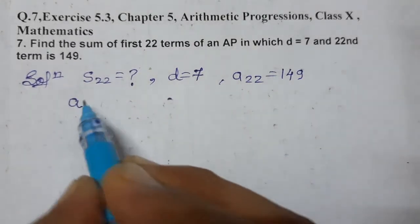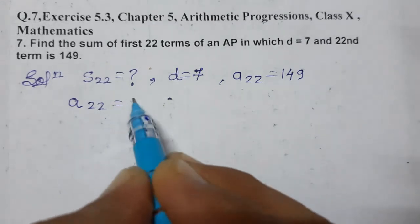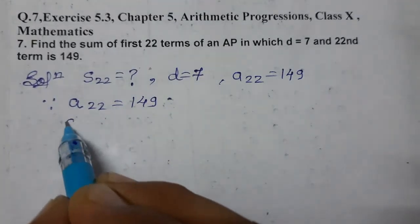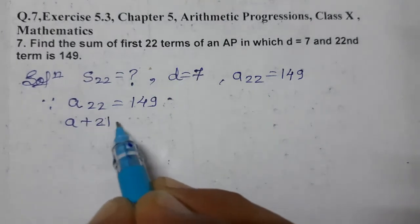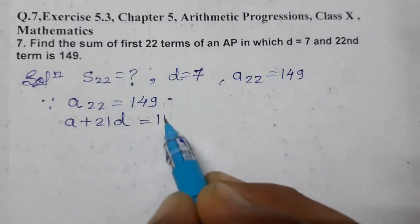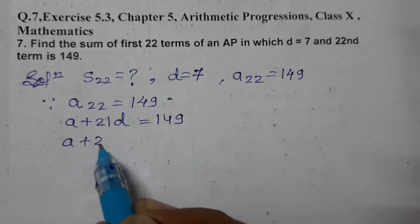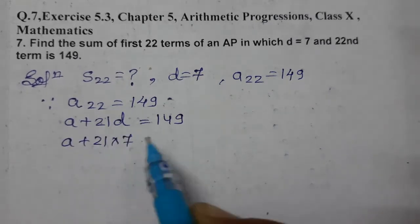We have a₂₂ = 149. This means a + 21d = 149. We need to find the value of a first. We have d = 7.